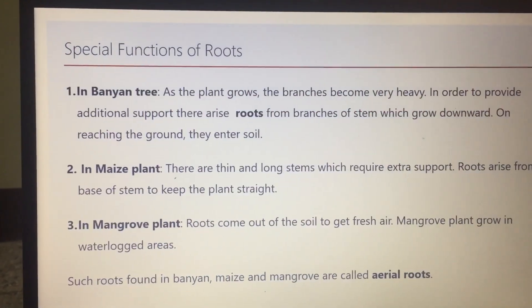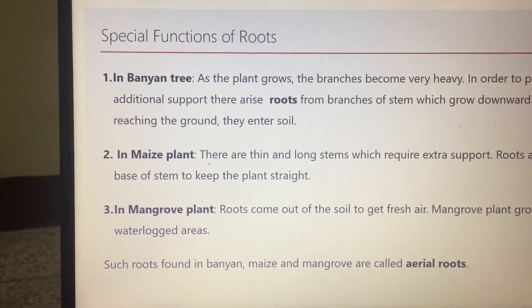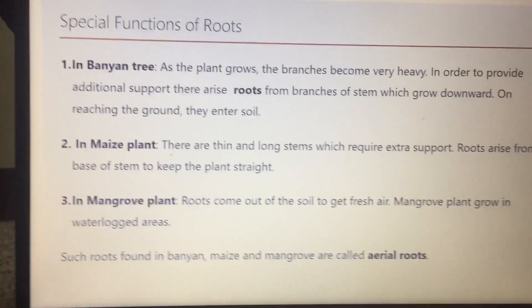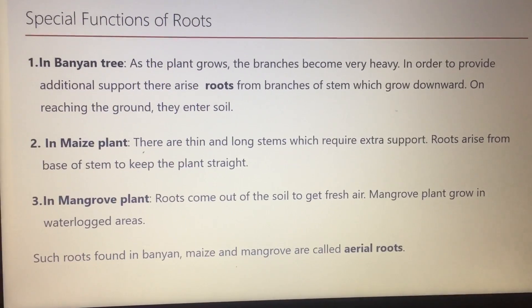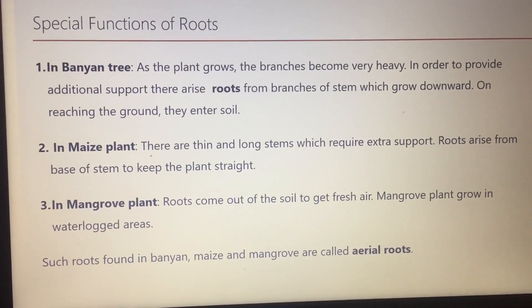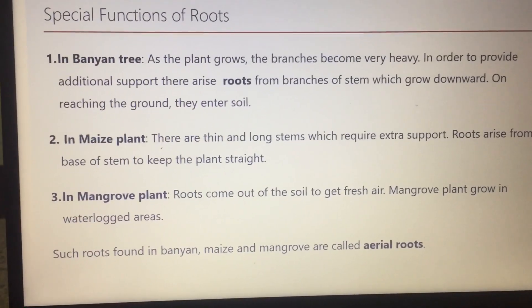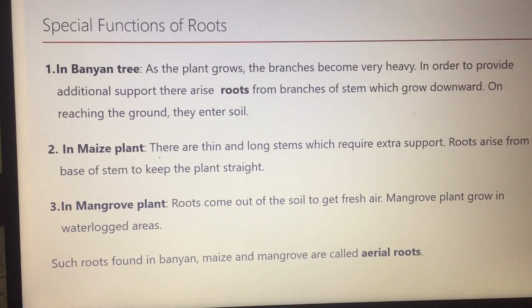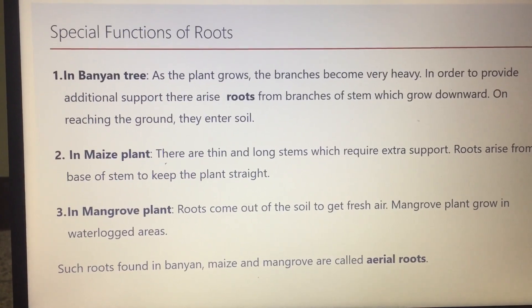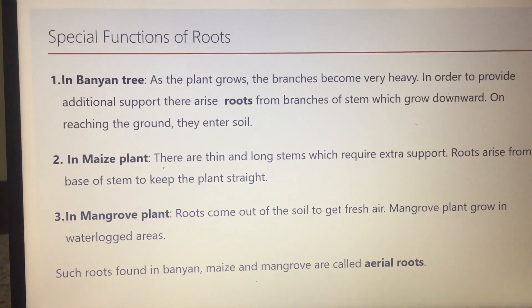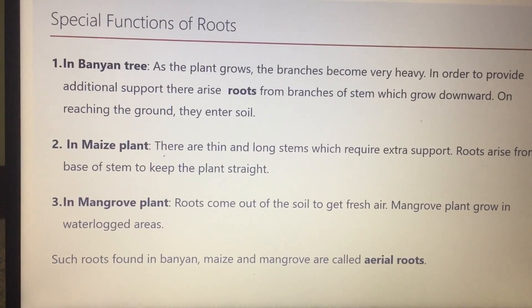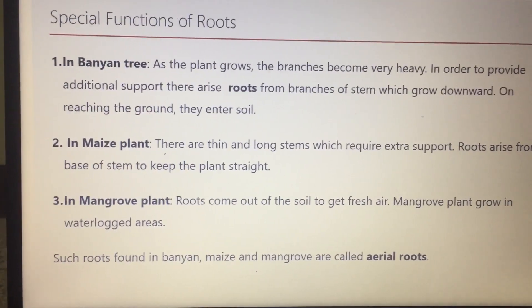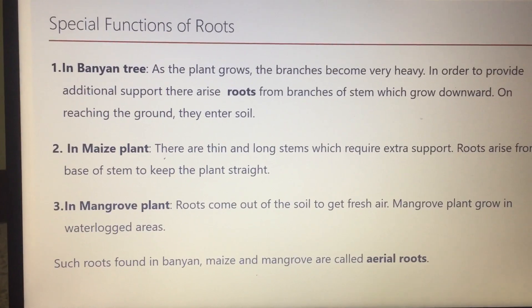Next are special functions of roots. Let's talk about the banyan tree, which is very common in plains. As the plant grows, the branches of the banyan tree become very heavy and need additional support. The roots of the banyan tree grow down from the branches into the soil to provide extra support. These are called prop roots.